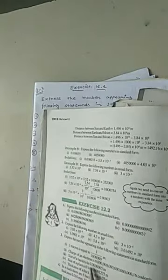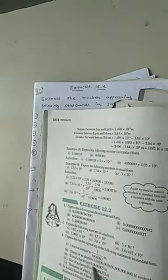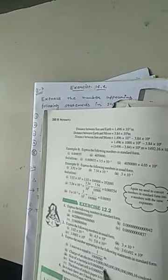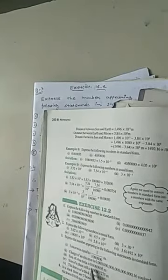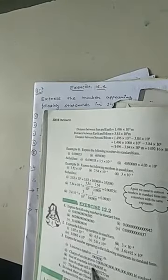In third one, size of bacteria is given 0.0000005 meter. So, in standard form, this point must be after the 5. So, it is 5.0 and how many steps this point shifts? Let us count. 1, 2, 3, 4, 5, 6 and 7.